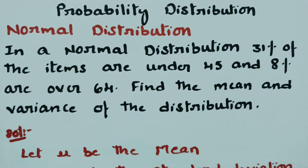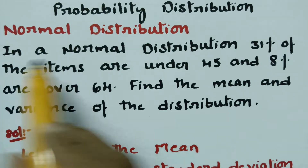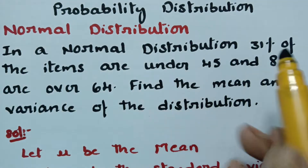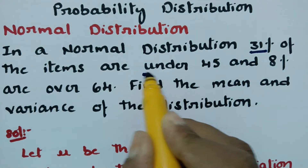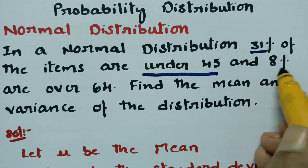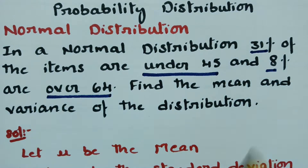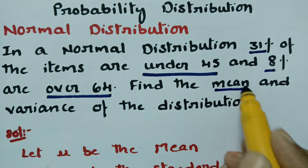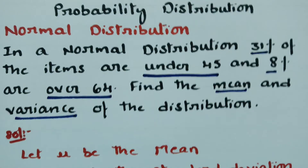This video is on normal distribution. In today's video we are going to explain a problem: 31% of the items are under 45 and 8% are over 64. Find the mean and the variance of the distribution.